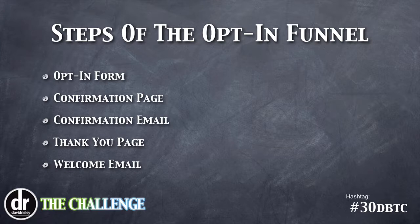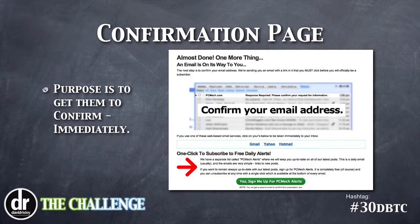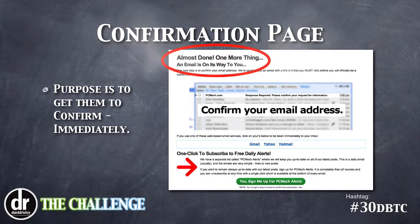Let's talk about those last four steps in detail. The confirmation page is where they go after initially clicking the submit button on the opt-in form. The purpose is to get them to confirm immediately — you want them to not let grass grow under their feet. Here's a screenshot of the confirmation page I have on my tech site at pcmec.com.